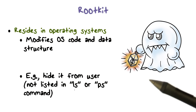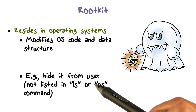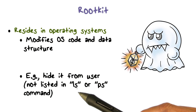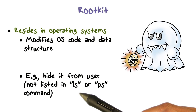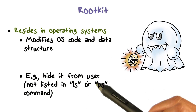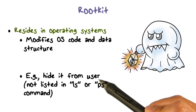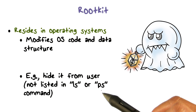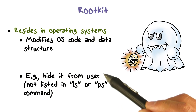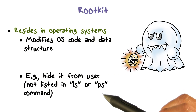For example, a rootkit can be used to hide a malware from the user. When the user uses the ls command to list the contents of a directory, the rootkit can change the output of the ls command so that the user will not see the malware file. Similarly, when the user uses the ps command to see what programs are running on a system, the rootkit can modify the output of the ps command to hide the running of the malware.